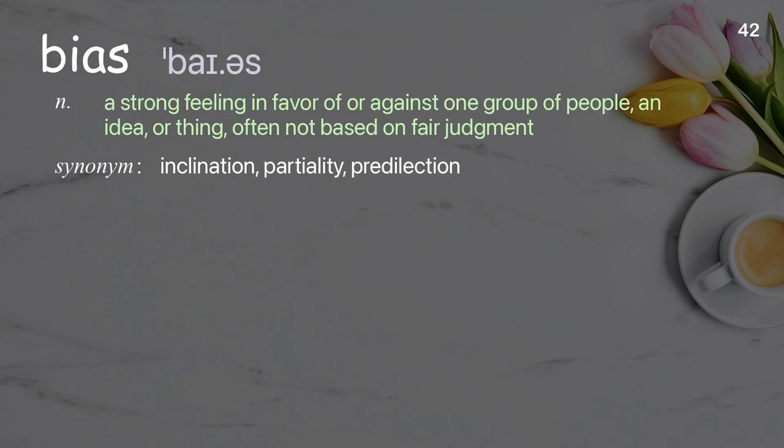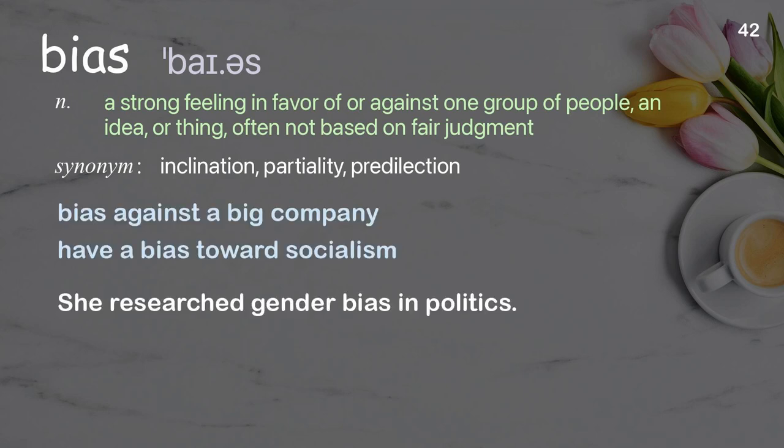Bias: a strong feeling in favor of or against one group of people, an idea, or thing, often not based on fair judgment. Examples: bias against a big company, have a bias towards socialism. She researched gender bias in politics.